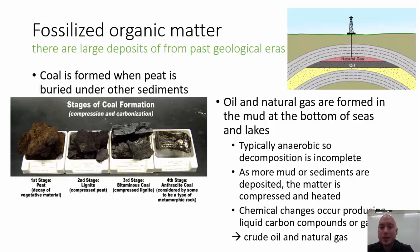Oil and natural gases are formed in the mud at the bottom of seas and lakes. Typically anaerobic, so decomposition is usually incomplete. As more mud or sediments are deposited, the matter is compressed and heated. Chemical changes occur producing liquid carbon compounds or gases. Crude oil and natural gas are a product of this. In Pennsylvania, large coal seams are found as there was a cycle of sea level rises and falls. Coastal swamps formed, were destroyed, and buried. Each cycle left a seam of coal.